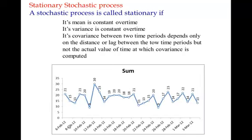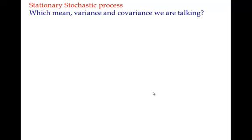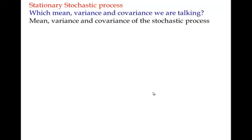Someone once asked me: what is the meaning of variance and mean here when you have only one data point? What you need to understand is that we are talking about a stochastic process — a particular realization is just the particular values that a stochastic process has taken. In a previous video on stochastic processes, I explained that even a time series like GDP is nothing but a particular outcome of a stochastic process.